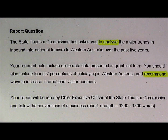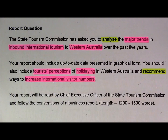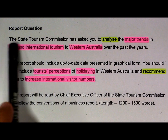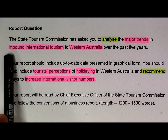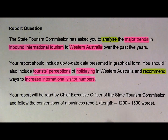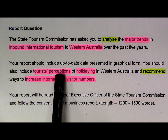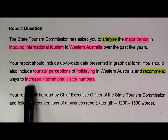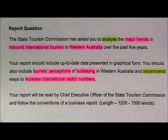Next, we'll look at the content words. We're looking here at things like the major trends in inbound international tourism — so that's not tourism from interstate — to Western Australia, looking at tourist perceptions of holidaying, and also ways to increase international visitor numbers. Those are the key content words.